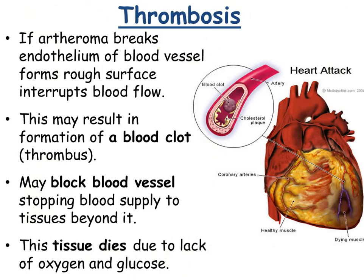What is thrombosis? If the atheroma breaks the endothelium of the blood vessel — so it ruptures — it forms a rough surface which interrupts the flow of blood. This can result in a blood clot, or thrombus. Thrombosis is essentially the plaque bursting to form a blood clot. This may block the blood vessel, stopping blood supply to the tissues beyond it, and that tissue dies due to the lack of oxygen and glucose.